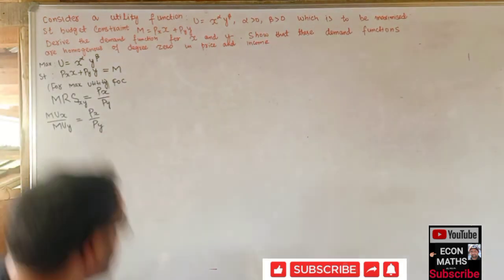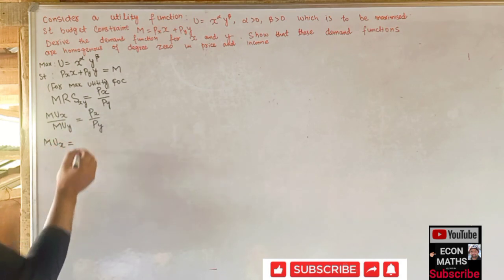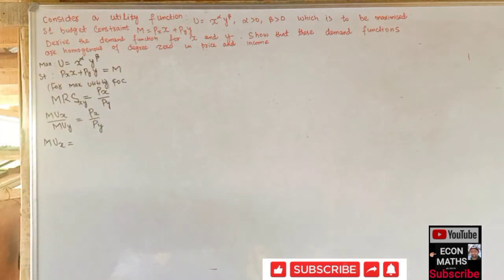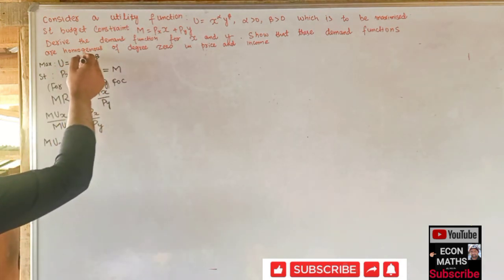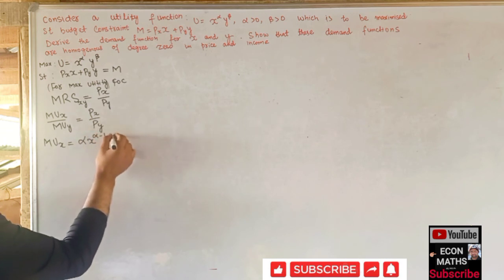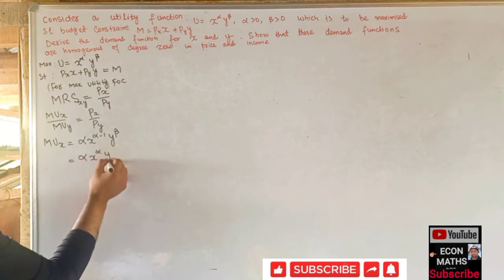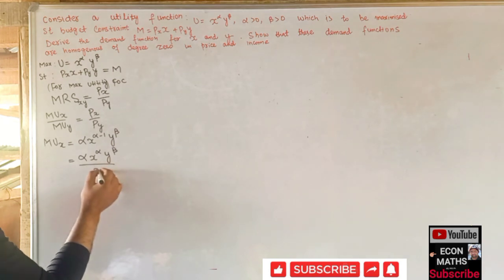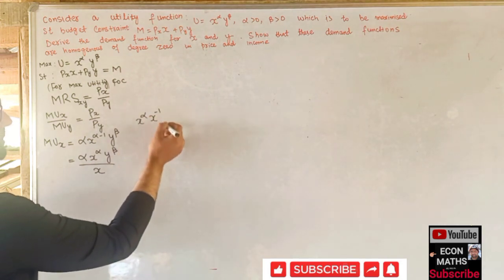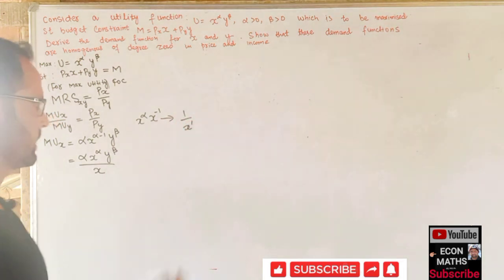Now we find the marginal utility of x by differentiating the utility function with respect to x. Partially differentiating x^α * y^β with respect to x, alpha becomes the coefficient: α * x^(α-1) * y^β. We can rewrite this as α * x^α * y^β divided by x.